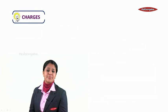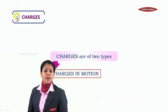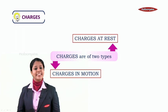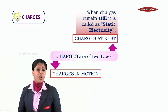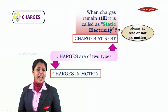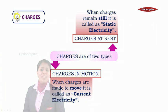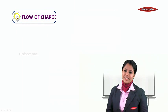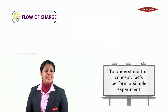Let's understand the different types of charges. Charges are of two types: first, charges in motion, and second, charges at rest. When charges remain still, it is called static electricity — static means at rest or not in motion. When charges are made to move, it is called current electricity. Now let's study what makes the charge flow.